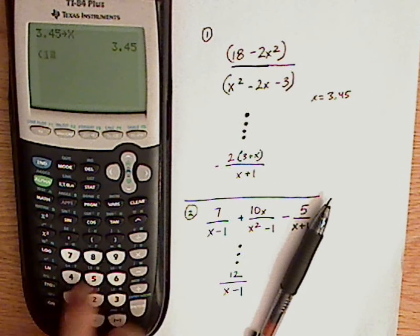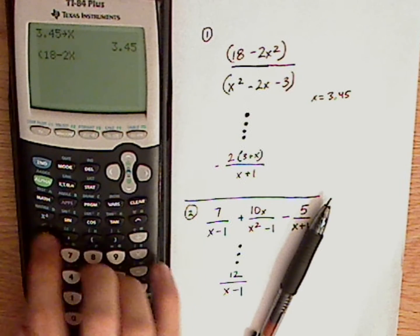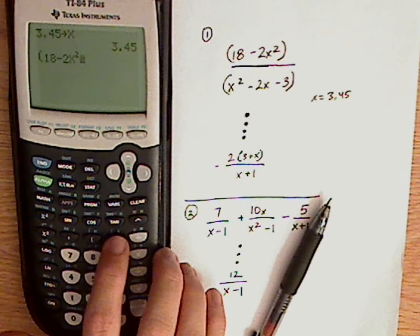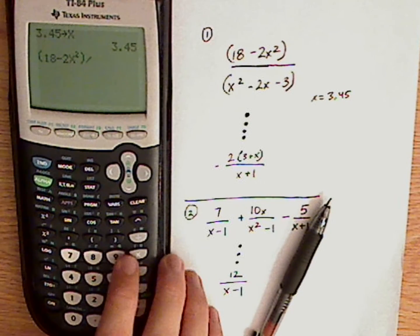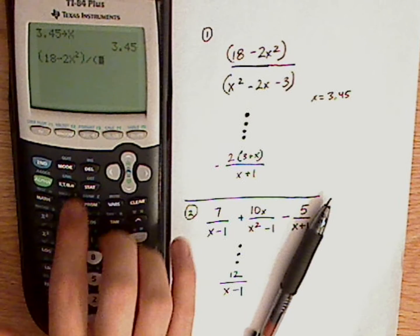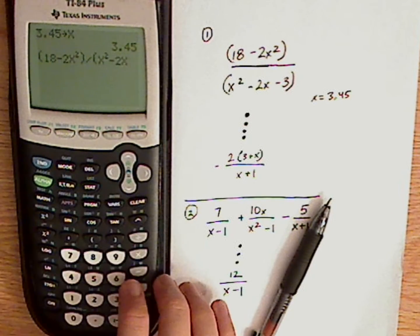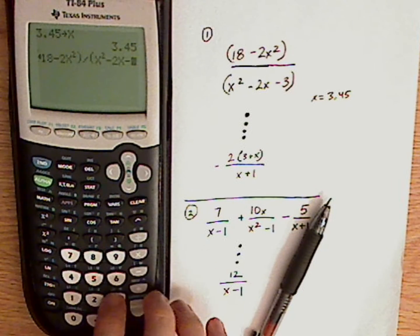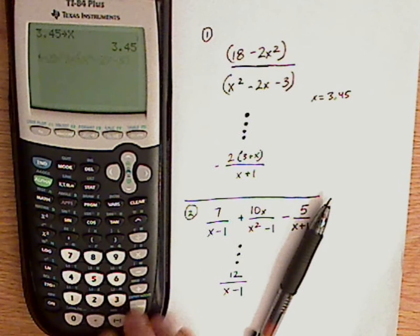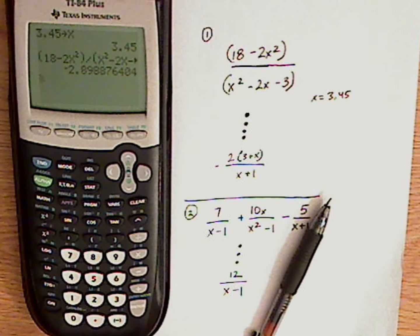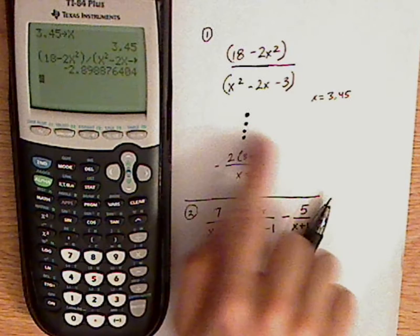So I'm just going to do that. Parentheses 18 minus 2x squared, closed parentheses, divided by parentheses x squared minus 2x minus 3, closed parentheses. And I get some value like negative 2 point something, whatever. And now I'm going to type in this.